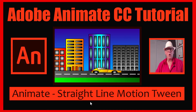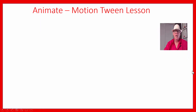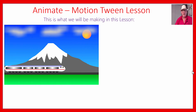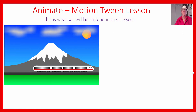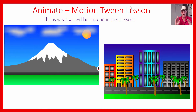Hey, this is Passy from Passy's World of ICT, the guy with the white hat. Today we've got an Adobe Animate lesson where we're going to make straight line motion tween. We're going to take our bullet train from the Animate drawing lesson and actually make it move — speed past Mount Fuji in Japan. We'll also show you how to make a car driving through the city with cool-looking buildings, a car, palm trees, and all of that. So it's a big lesson.